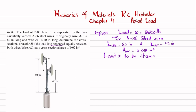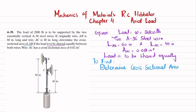We have to find and determine the cross-sectional area of AB. So let's start with the solution. The first step: we have been given that the load is to be shared equally.